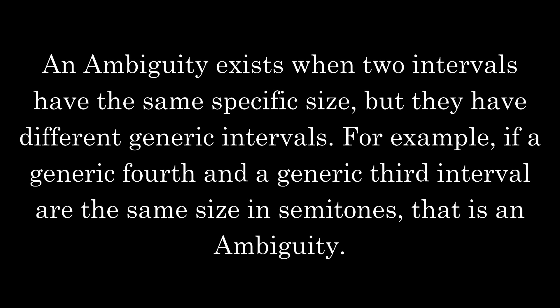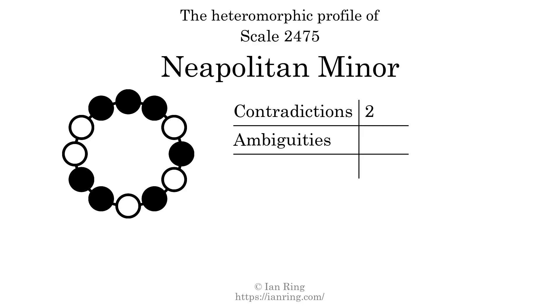An ambiguity exists when two intervals have the same specific size, but they have different generic intervals. For example, if a generic fourth and a generic third interval are the same size in semitones, that is an ambiguity. The number of ambiguities in this scale is 22.